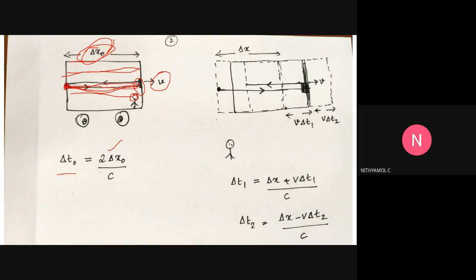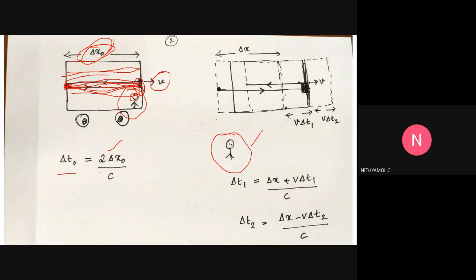When you observe the light here, you observe a moving plane. The bulb or mirror is not at rest — this is a moving frame. For the external observer, the distance between the two points is delta x.